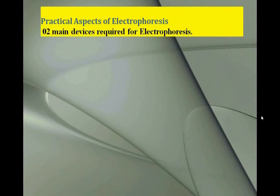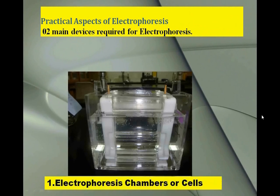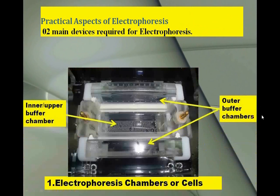Name two main devices required for electrophoresis. One, electrophoresis chambers or cells. It contains mainly two types of chambers, outer and inner. Number of inner chambers may vary one to many.